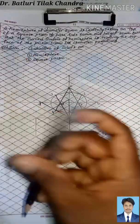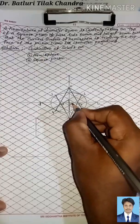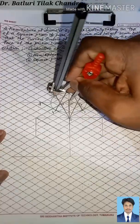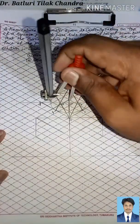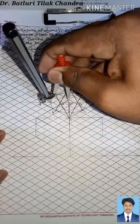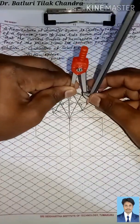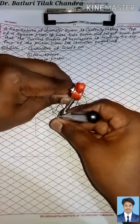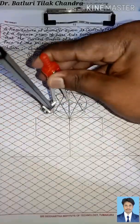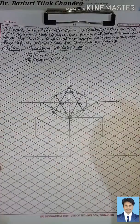Now identify the center of the isocircle, labeled C dash. From C dash, measure the distance to the curved surface and use that length to construct the semicircle representing the hemisphere. This completes the isometric drawing of the hemisphere portion.